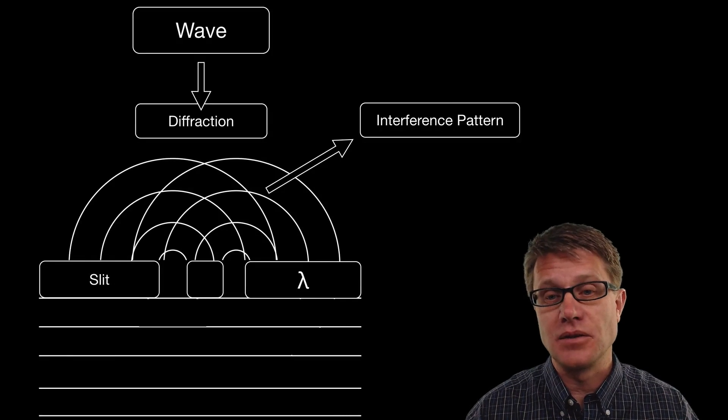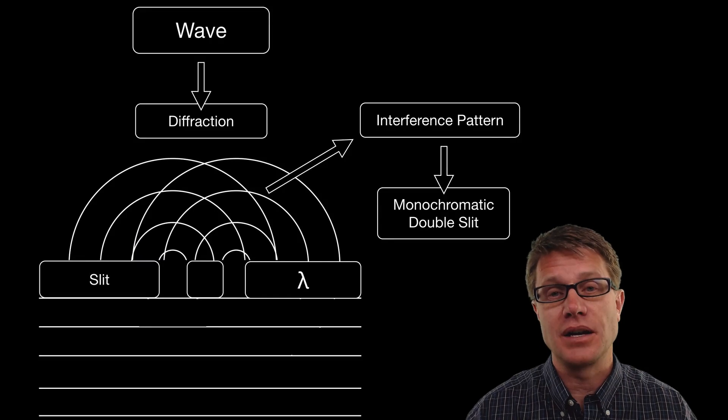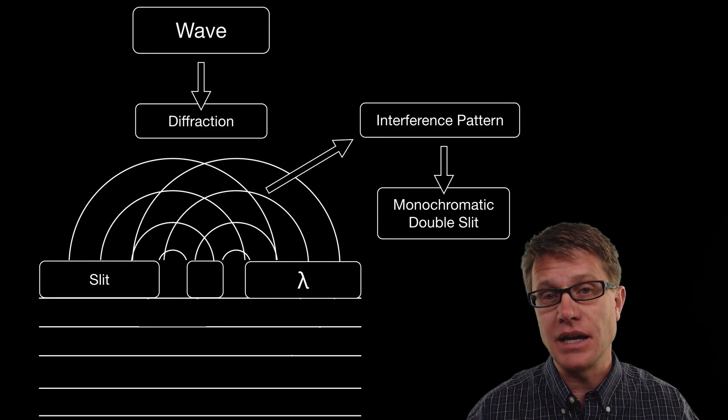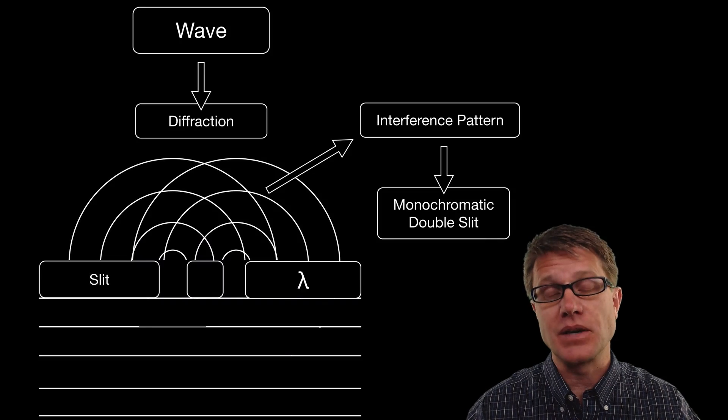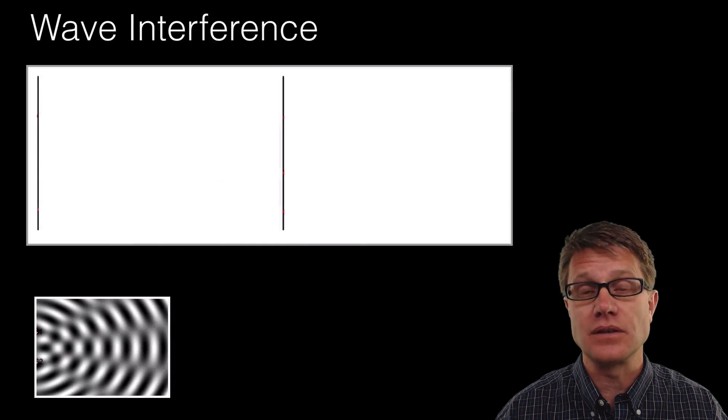And so a great example of this that you could see in the science lab would be the monochromatic double slit. So when you are shining light through these two slits you will actually get these bands of light. Sometimes it is bright and sometimes it is canceling itself out.